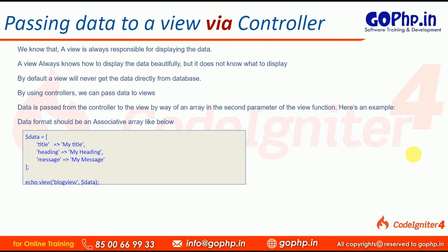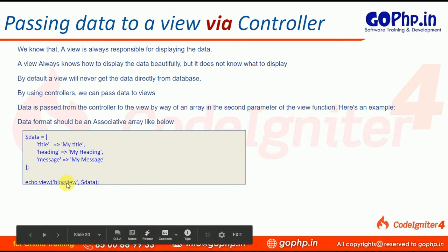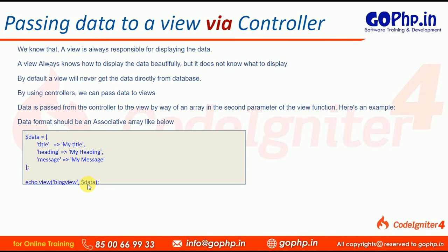We already saw in an earlier session how to create a view and how to load that view into a controller. We have a global function called view. The first parameter is the name of the view, and the second parameter is the data. Here I'm preparing some data — this data should be prepared in the controller, and it's passed to the global view function as a second parameter.